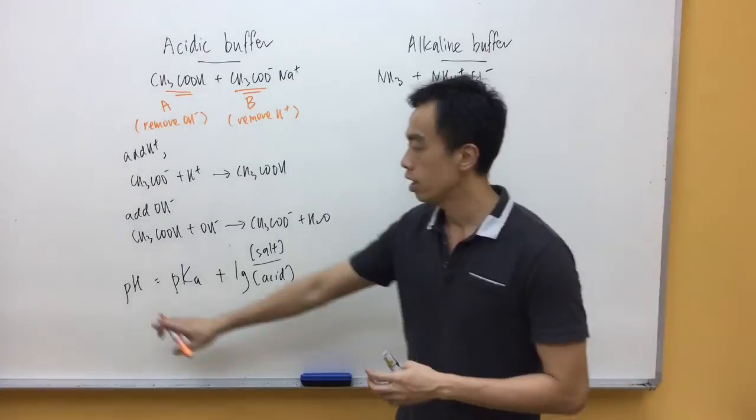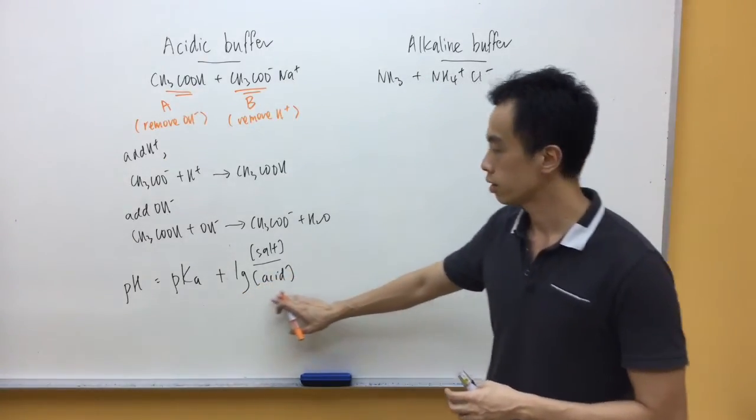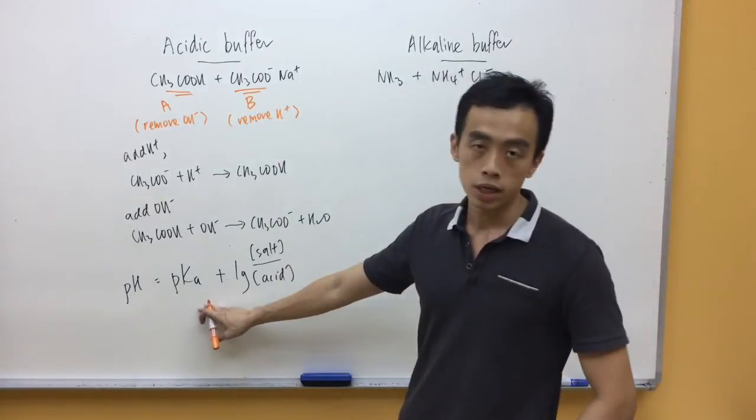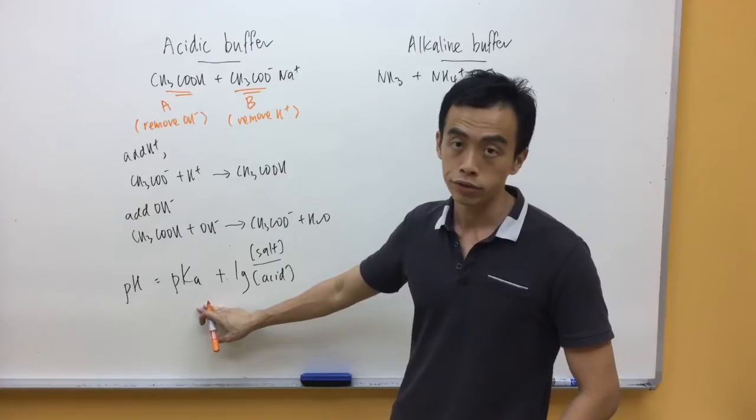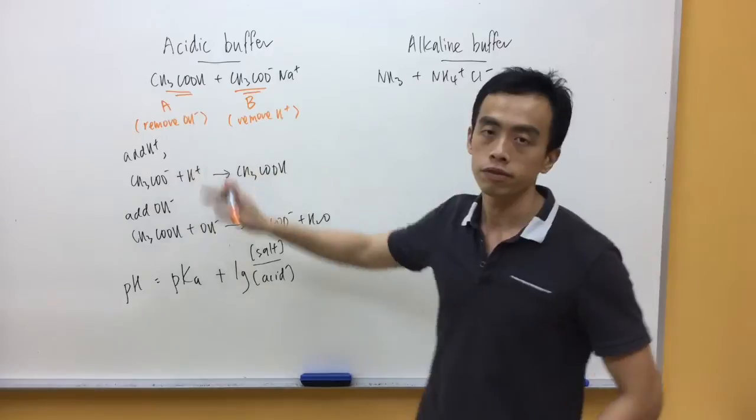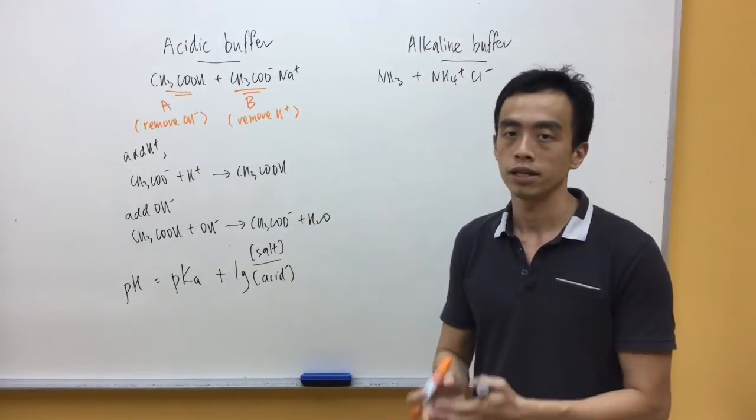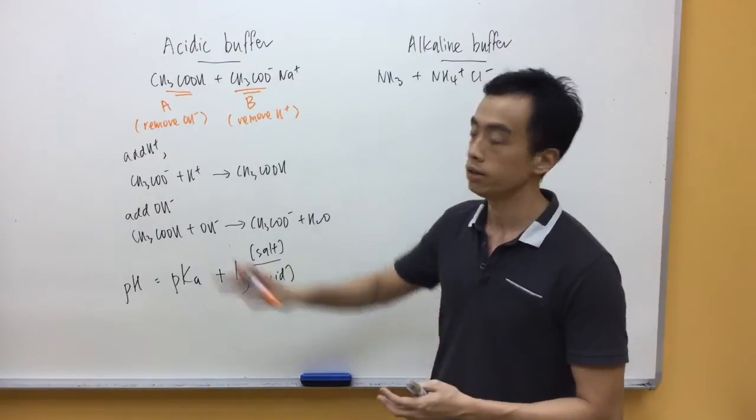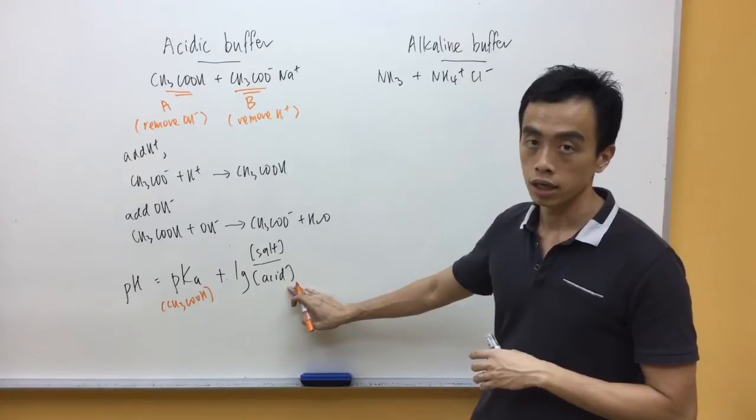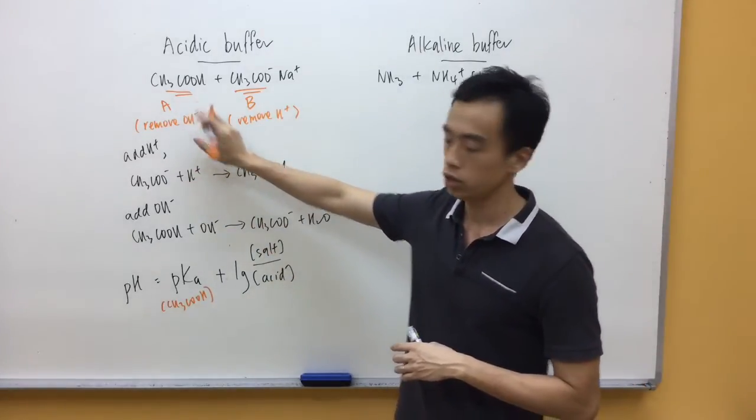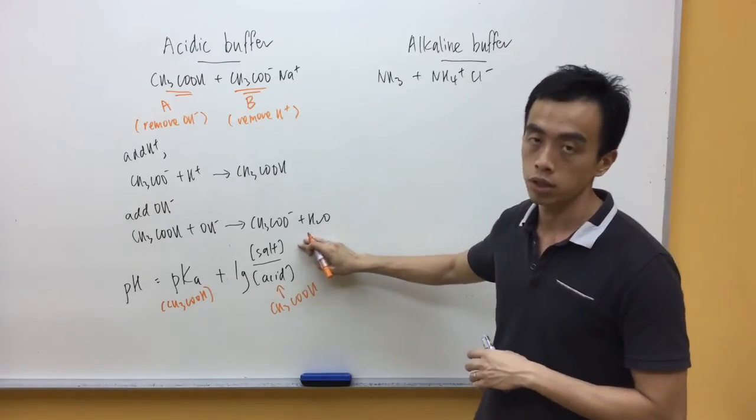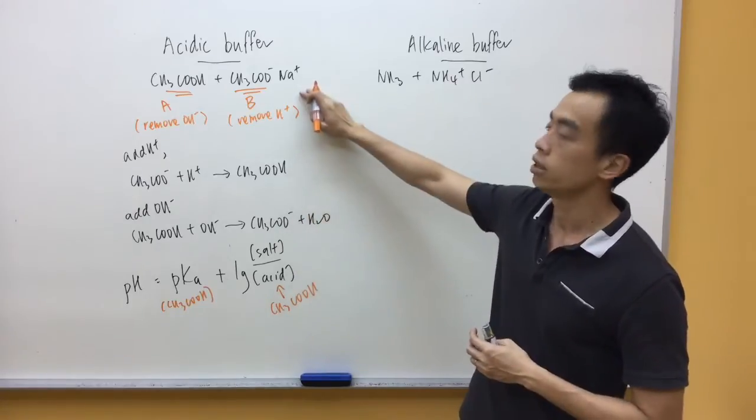Now the equation is given by pH equals pKa plus log concentration of salt over concentration of acid. Now pKa of course represents the acid dissociation constant of our acid. Now in this case, it's not ambiguous. Inside this buffer, I only have one acid and one base. So therefore, it must represent the Ka value from CH3COH. Acid, again, is clearly CH3COH. Salt is the conjugate base, CH3CO-.